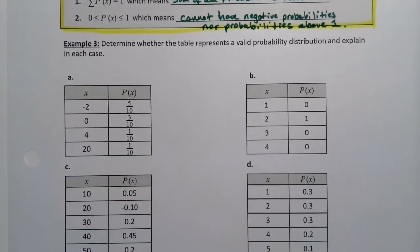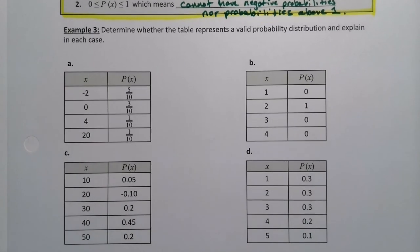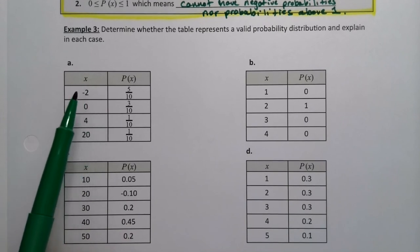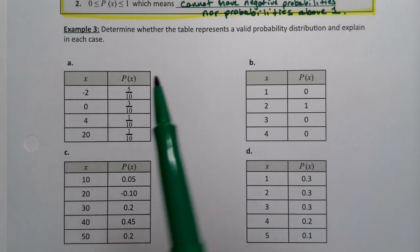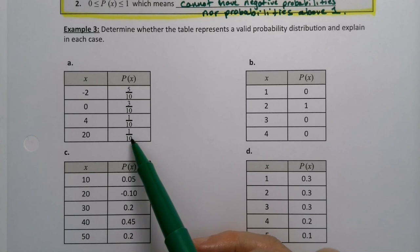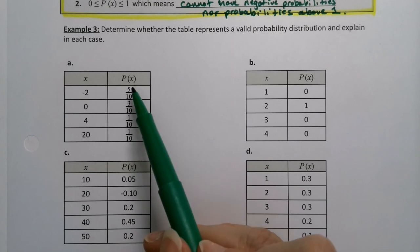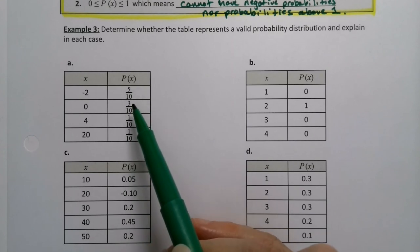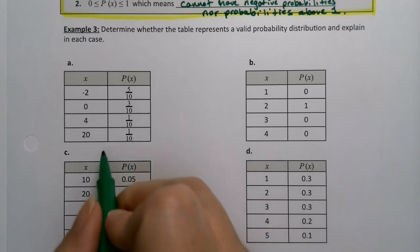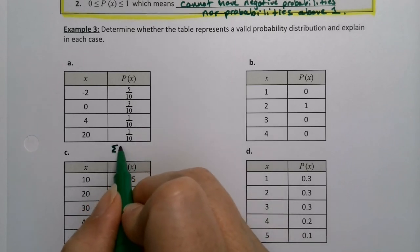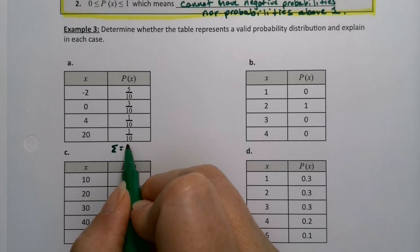So let's look and see whether these probability distributions are valid. If you look at the first one, you might think you're in trouble because of that negative, but you're not. X can be anything. It's just the probabilities cannot be negative. And you would need these four numbers to add up to one. Five plus three is eight, eight plus one is nine, nine plus one is ten.